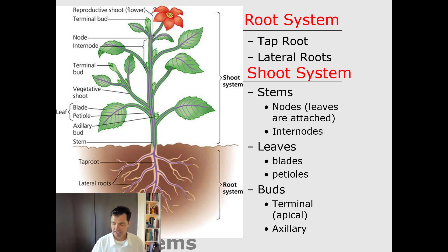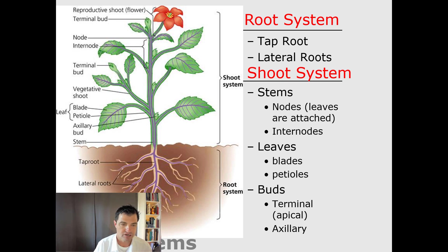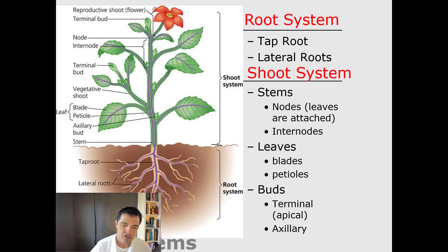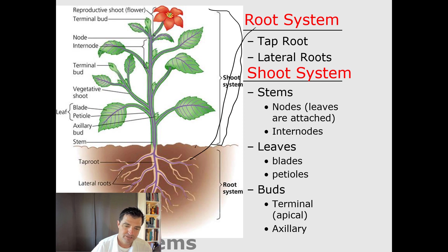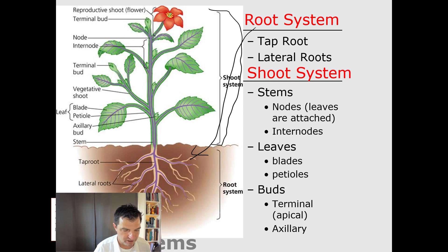When we talk about the plant, instead of just talking about the tissues, we can also talk about the systems of the plant. Two ways we can break it down: the shoot system, which is the things that are above the ground typically, and the root system, which are things typically below the ground.